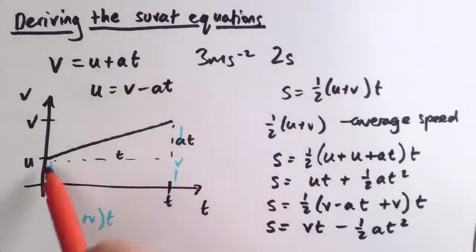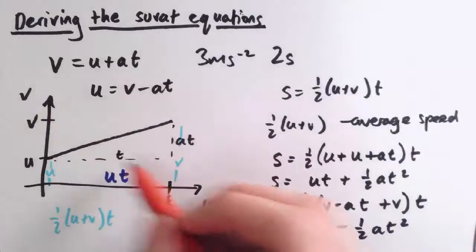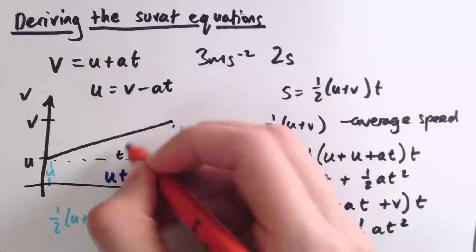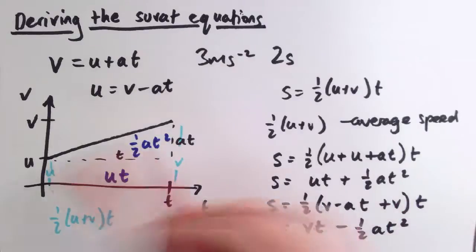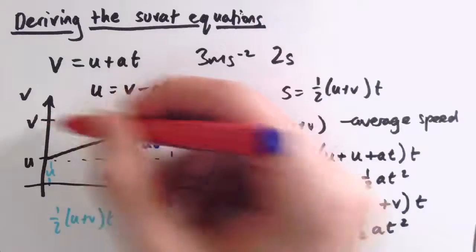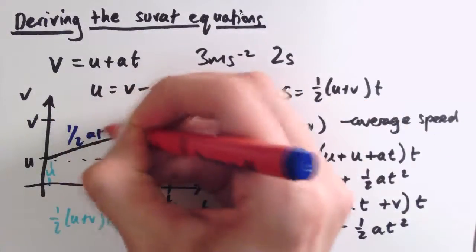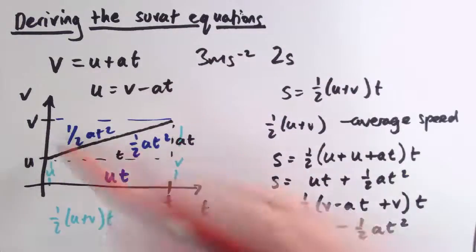And we can see that on the graph as well. We've got u times t is the area of this rectangle here, and this triangle has area half base times height, so half t times at, which is one-half at squared. That shows this one here, the displacement, the area under the graph is ut plus a half at squared. And this rectangle is v times t, and this triangle here would also be one-half at squared, so we can also see that it's vt minus one-half at squared.